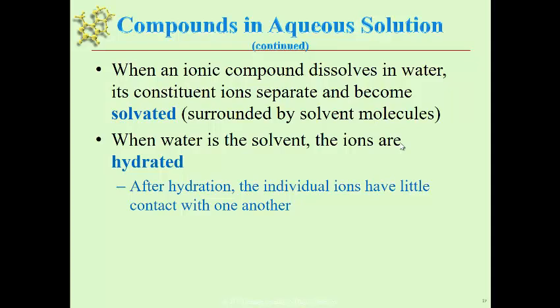There's a term that we use, the term called solvated. So when an ionic compound dissolves in water, we say it's solvated because the solvent molecules are actually going to surround the cation and the anions, which become separated from one another. If the solvent is water, we refer to it as being hydrated.